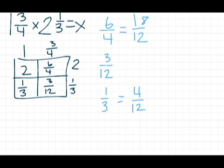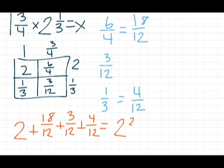The last step is to add all my partial products together. So I'll bring my whole number two down, plus eighteen-twelfths, plus three-twelfths, plus four-twelfths. And I get my answer two and twenty-five-twelfths.